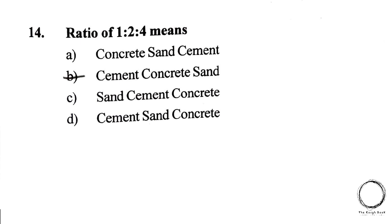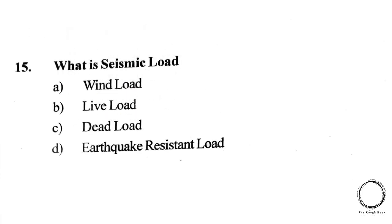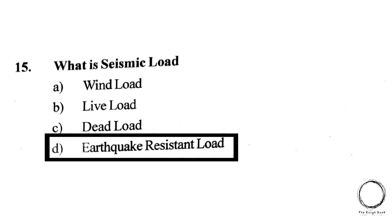Next question: The ratio of 1:2:4 refers to — A) Concrete:Sand:Cement, B) Cement:Concrete:Sand, C) Sand:Cement:Concrete, D) Cement:Sand:Concrete. The answer is B) Cement:Concrete:Sand. Next question: What is seismic load? A) Wind load, B) Live load, C) Dead earthquake resistant load, D) Earthquake resistant load. The answer is D) Earthquake resistant load.